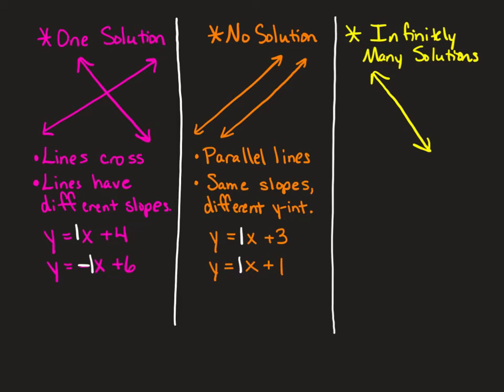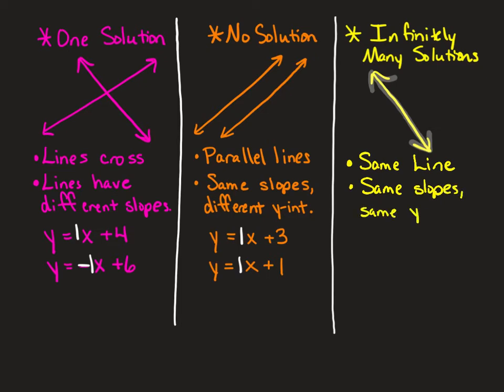For infinitely many solutions, you graph one line and then go to graph your other equation, and it ends up being the same line — they graph one on top of the other. There's an infinite number of solutions because they have all points in common. They will have the same slopes and the same y-intercepts, because all points are in common. This is different from no solution, where there are no points in common.